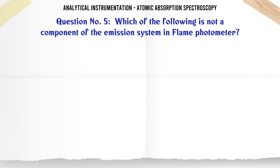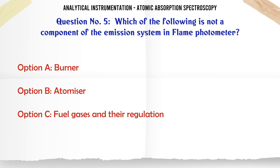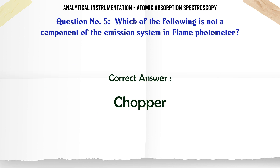Which of the following is not a component of the emission system in a flame photometer? A. Burner. B. Atomizer. C. Fuel gases and their regulation. D. Chopper. The correct answer is chopper.